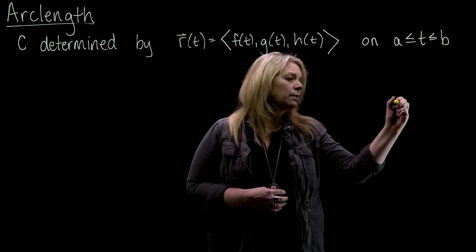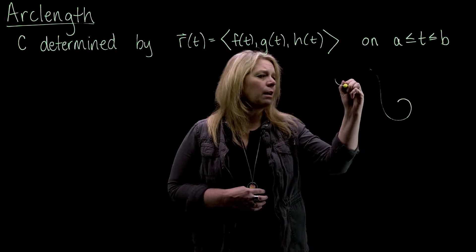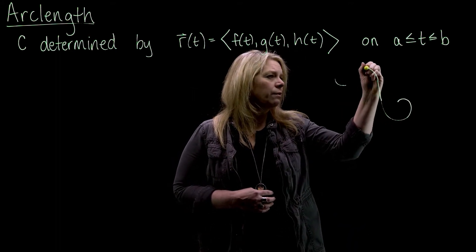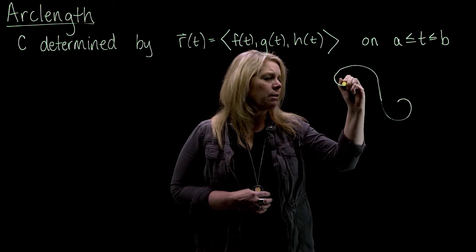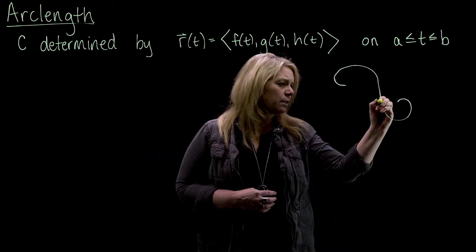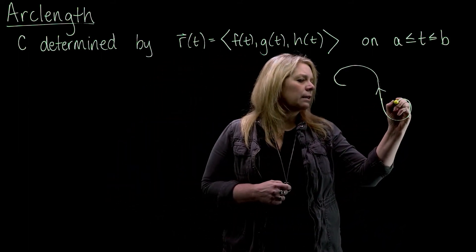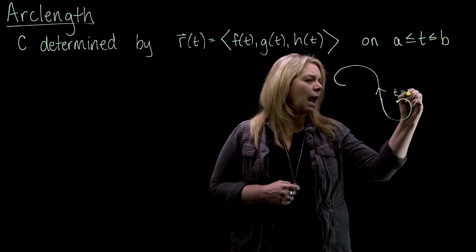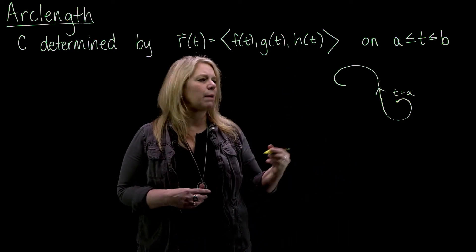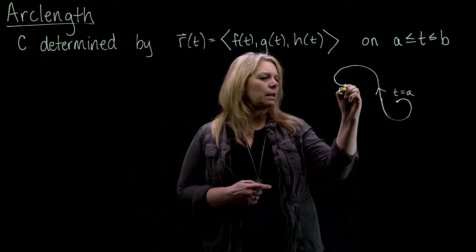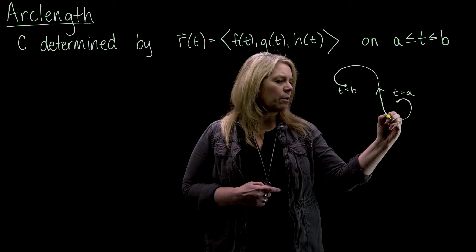So let's think a little bit about this. I'm going to just draw a curve here in the surface of the screen, not really a space curve, just a plane curve here. I'm going to give it an orientation, and this t equals A would correspond to the starting point of my curve, and t equals B, the ending point of my curve.